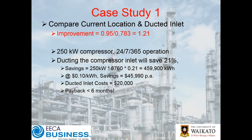If that was a 250 kilowatt compressor running 24/7, 365 days a year, a 21% saving — what does that actually look like in terms of numbers? We multiply that through: it's just under 460,000 kilowatt hours. At 10 cents a kilowatt hour, that's just under $46,000 per annum.